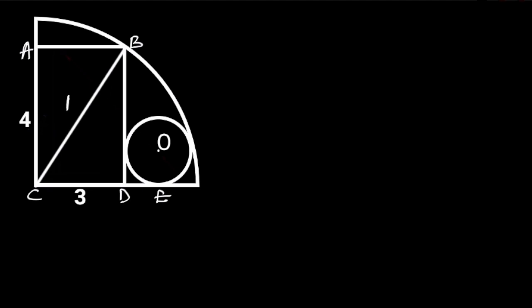Observe that the diagonal of this rectangle is the radius of the quarter circle. So, let's label it as uppercase R. Now, let's find the radius of the quarter circle.